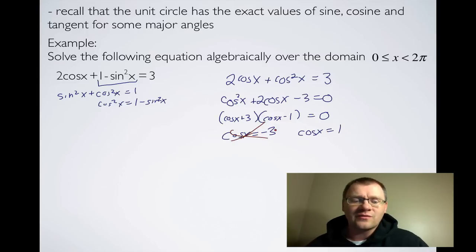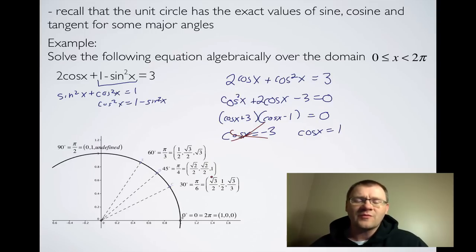But cosx = 1 appears on our unit circle. And remember on our unit circle that the answer for cosx is always your first coordinate. And so we're looking at this number right here. There's a 1 right there. So that's at 0 degrees. So cosx = 1, that would be where x = 0 degrees.